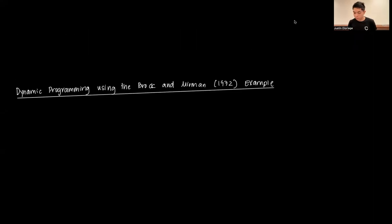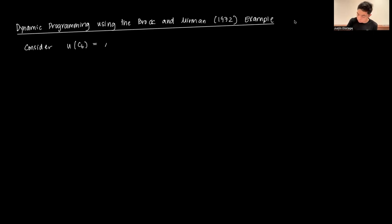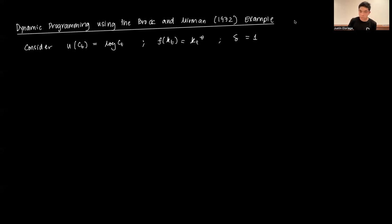Hi everyone, and welcome to this video on dynamic programming using the Brock and Merman form. Consider we have the utility function u(ct) = log(ct), and we have our normalized production function which is k_t^θ. Let's assume for this example that the rate of depreciation δ = 1. This is a specific example of the general growth model that we've been discussing.